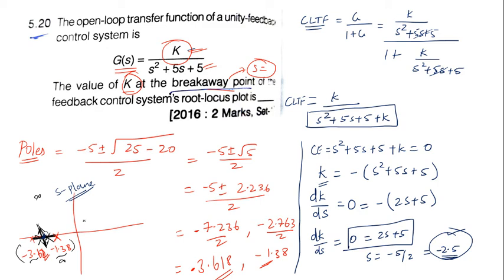So to find the value of k, let's take the equation of k. So we have an equation of k over here. So let's take that equation: k equal to minus s square plus 5s plus 5.